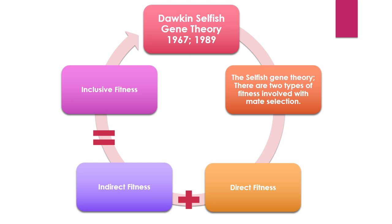The selfish gene theory involves two types of ways for individuals to pass on their genes to the next generation. One way is through direct fitness, where individuals reproduce and pass on their genes to their offspring. The second way is through indirect fitness, which involves helping relatives with the same genes to reproduce and bring up children to a reproductive age. Both of these lead to inclusive fitness, which is the measure of all genes passed on to the next generation.